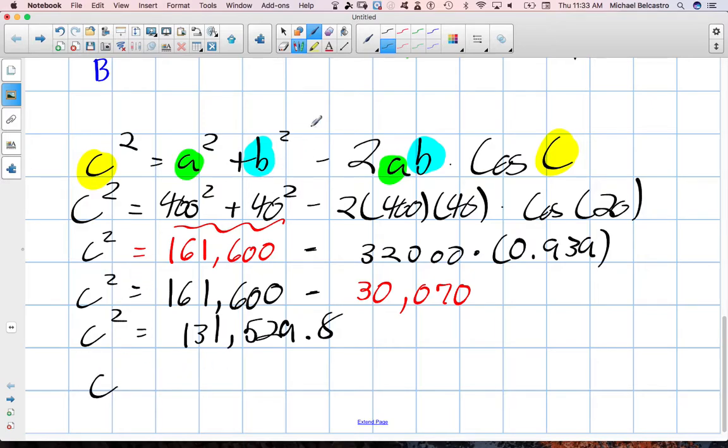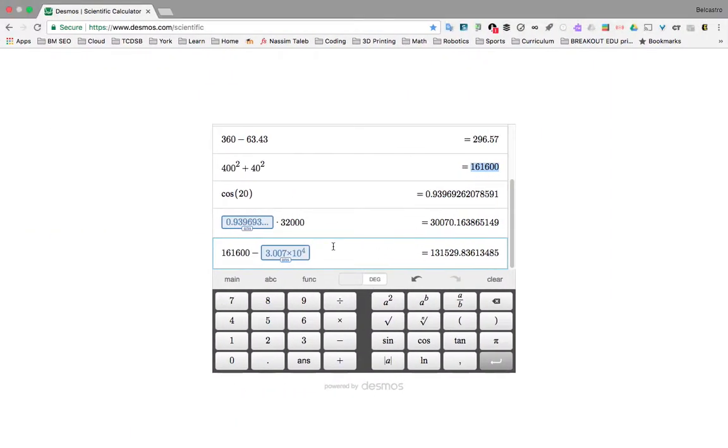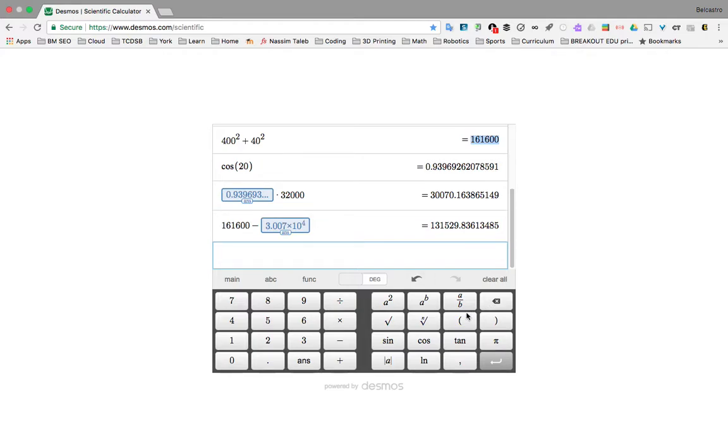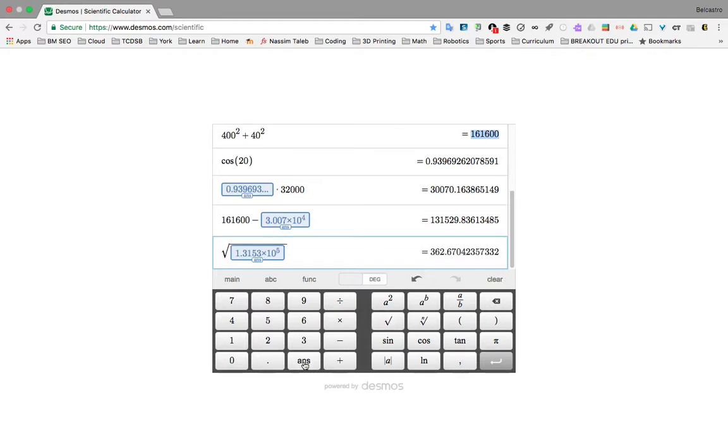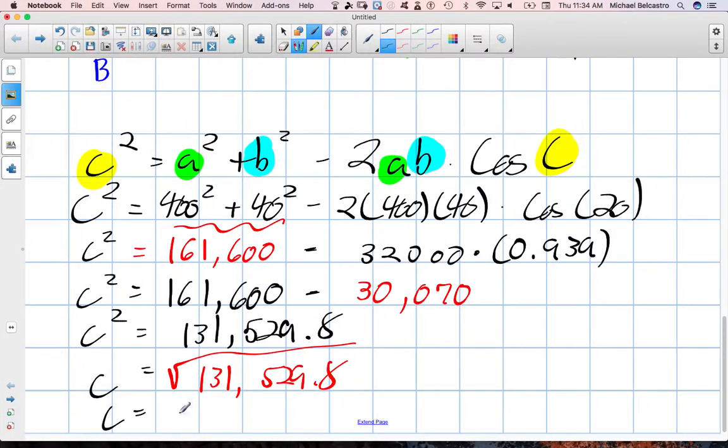And then, to isolate for C, we need to square root the right side of our equation. So, we need to square root this answer, 131,529.8. And because our calculator on the other side has such a nice memory function, we are going to take the square root of our answer from above. And it gives us 362.6. So, 362.6.